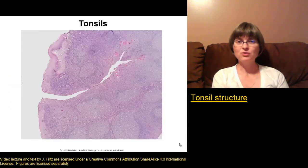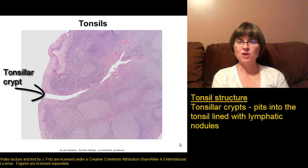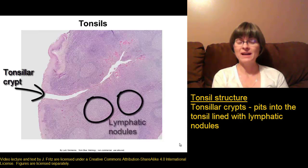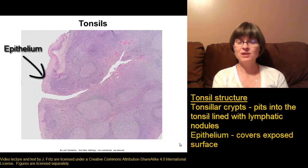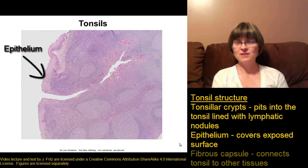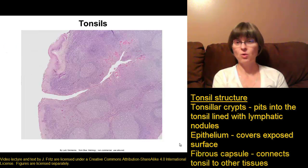When we look closely at the structure of the tonsils, we can see that there are pits called tonsillar crypts that reach deep into the tonsils. These tonsillar crypts are lined with lymphatic nodules — a type of lymphatic tissue. There's also epithelium that covers the exposed surface of the tonsils, the part you can see when looking in the mouth, and the other edge is covered in fibrous tissue that holds it in place.